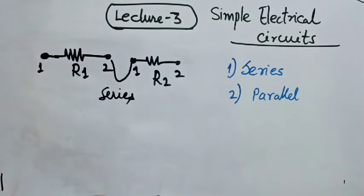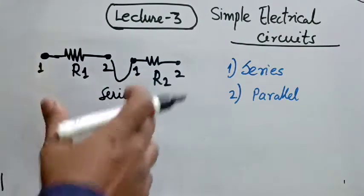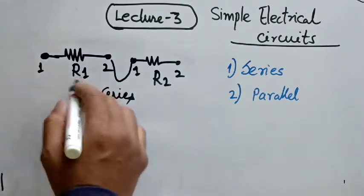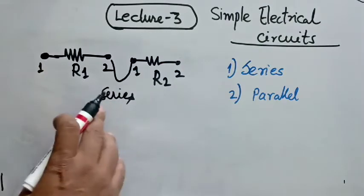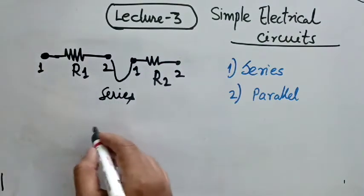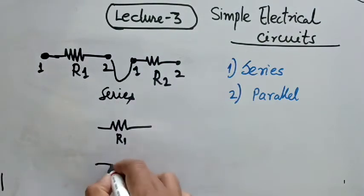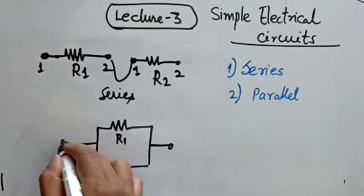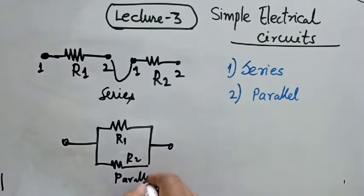And what is the effective resistance value? We will come to those terms a little bit later in this video. For now, R1 and R2 connecting the terminals like this will make a series connection, and R1 and R2 connected like this will make a parallel connection.